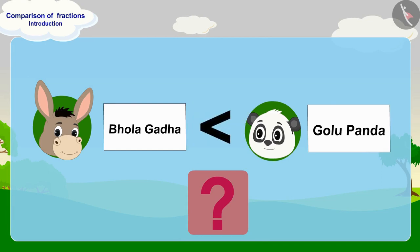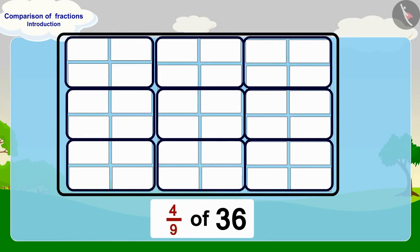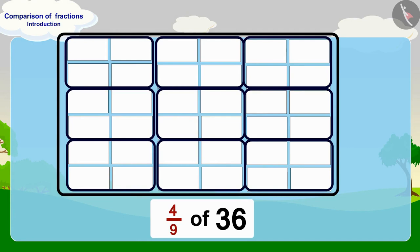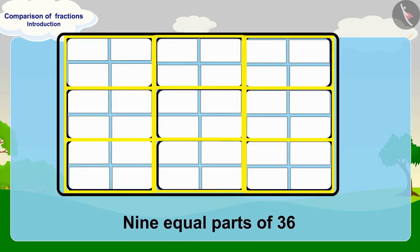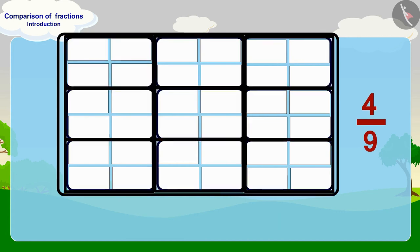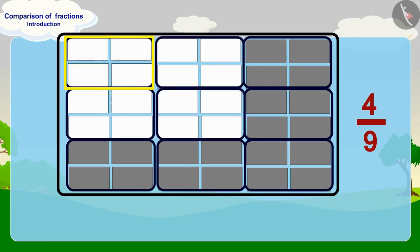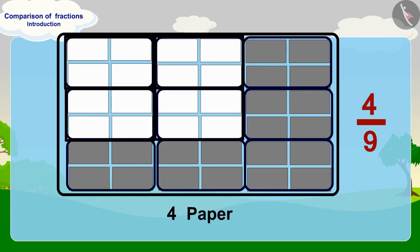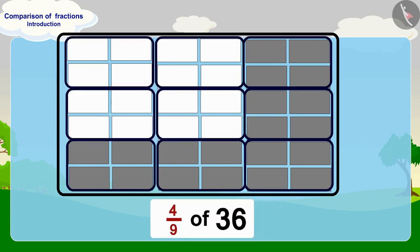Children, can you tell how many pieces of paper Bholla has written his name on — more or less than Golu? Bholla has written his name on four ninth of 36. For four ninth of 36, we divide 36 into nine equal parts; each part has four pieces. In four ninth we take four of these nine equal parts. There are four pieces in one part, so in four parts: four times four is 16 pieces of paper.